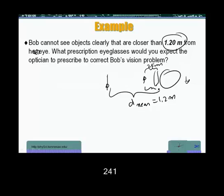So D-O for the lens is going to be 25 centimeters. D-I is going to be minus D near or minus 1.2 meters. So we'll write this as 0.25 meters.